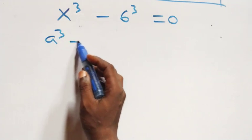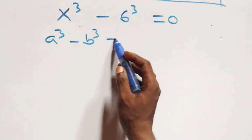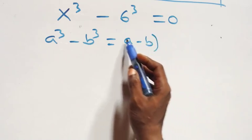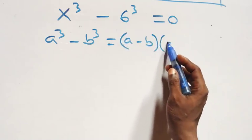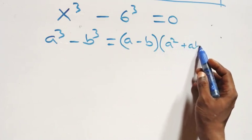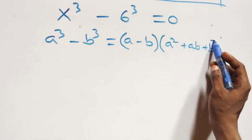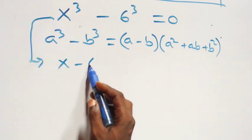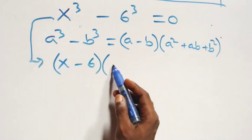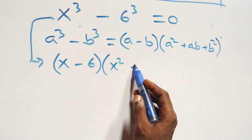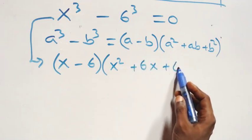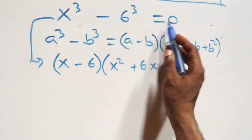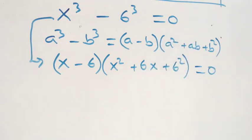Now solving the second case: x^3 - 6^3 = 0. Using the difference of cubes identity a^3 - b^3 = (a - b)(a^2 + ab + b^2), this becomes (x - 6)(x^2 + 6x + 36) = 0.